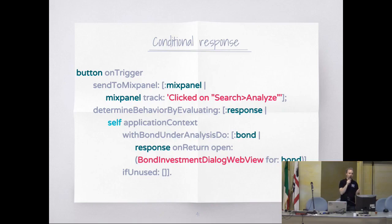When the user clicks the button, it will check some application context — this is server state. If you have a bond under analysis, and the response when you return is to open a dialog showing that. If you don't have a bond under analysis, do nothing.